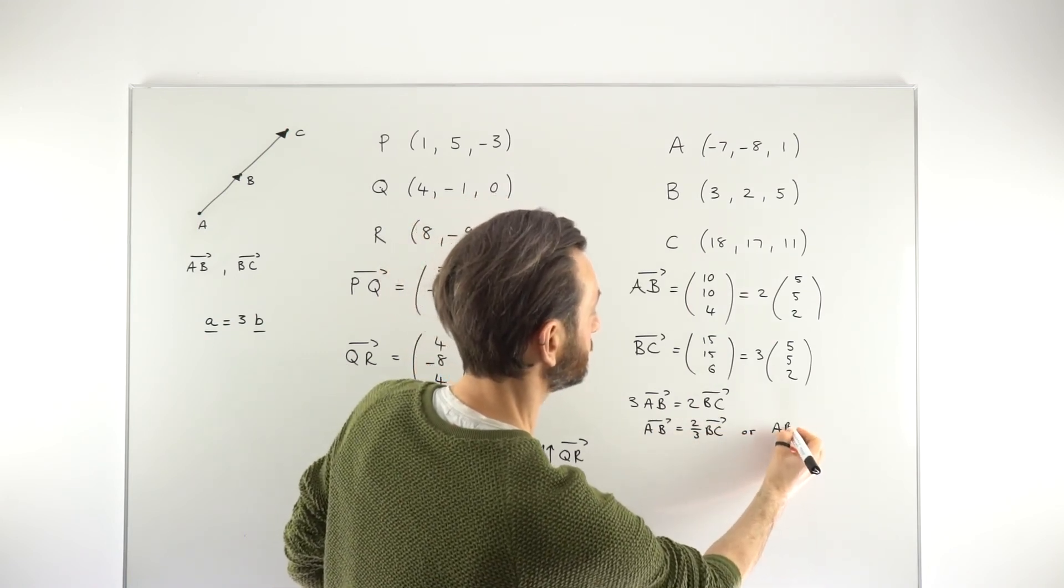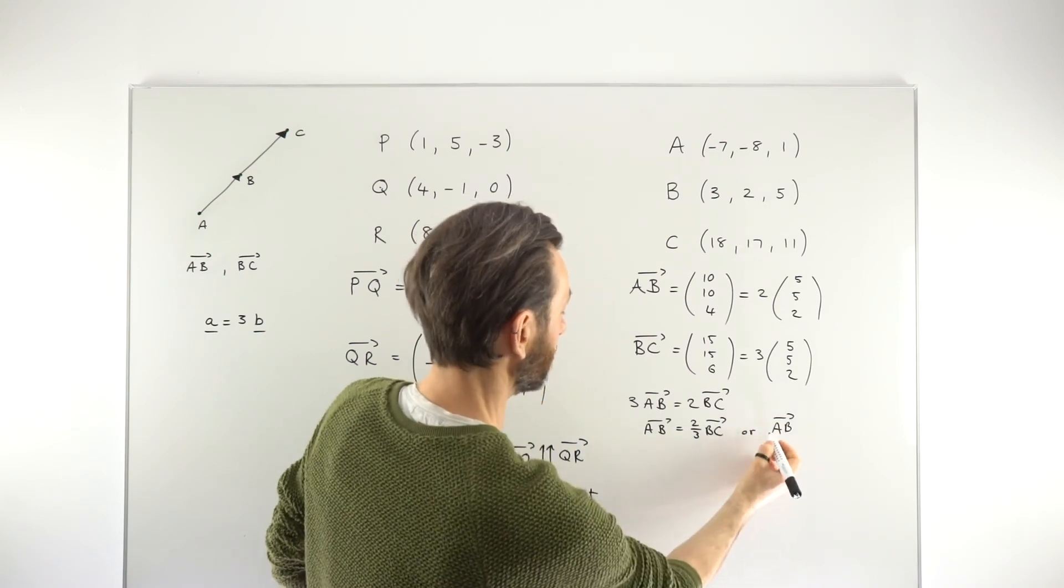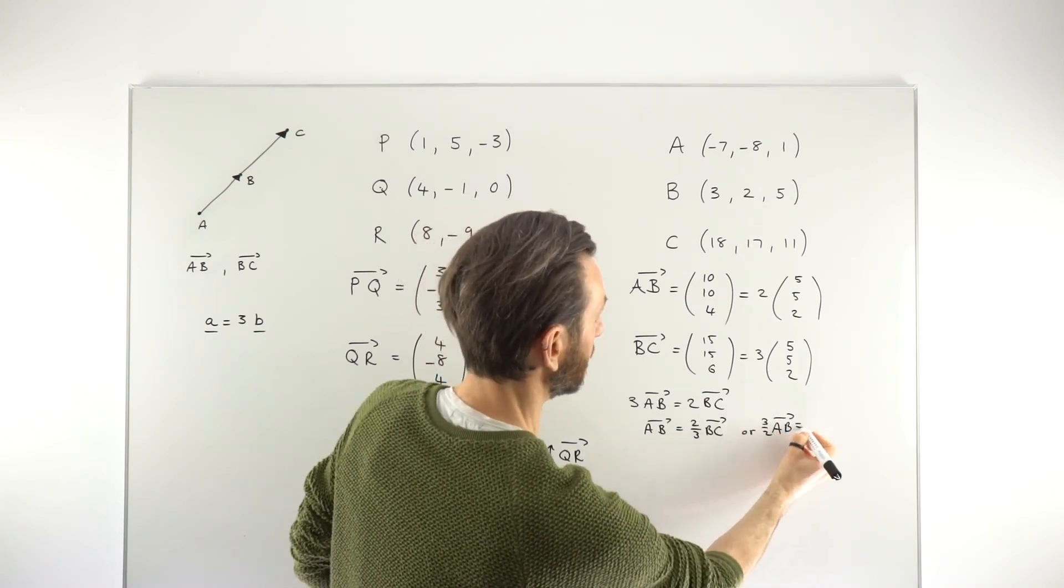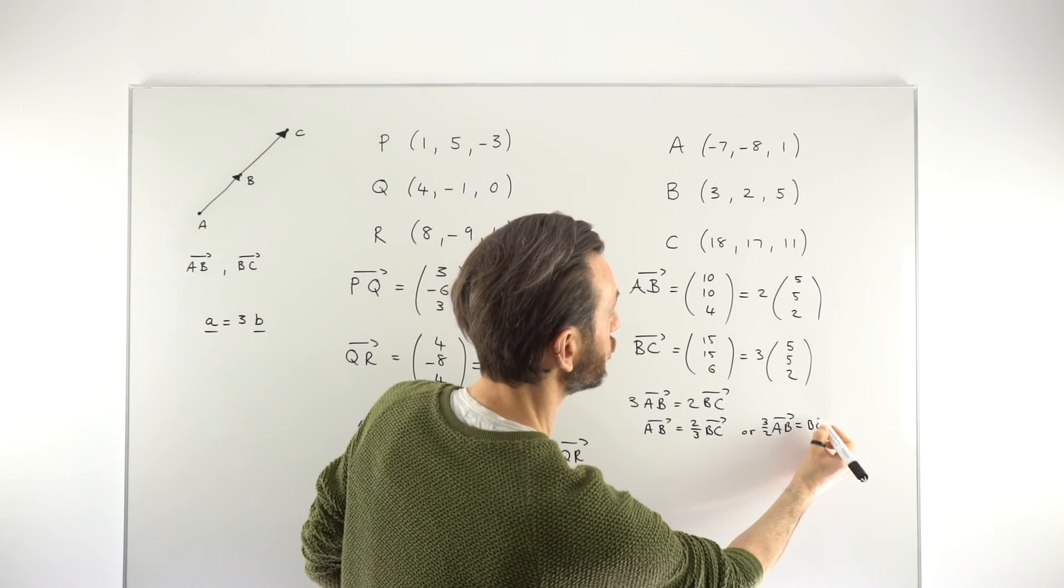So you can divide either way around or don't divide. This line, this line, and this line are all good enough to show that the vector AB and BC are parallel to each other.